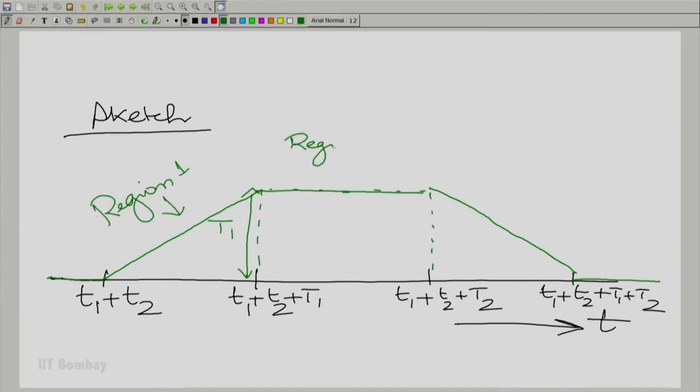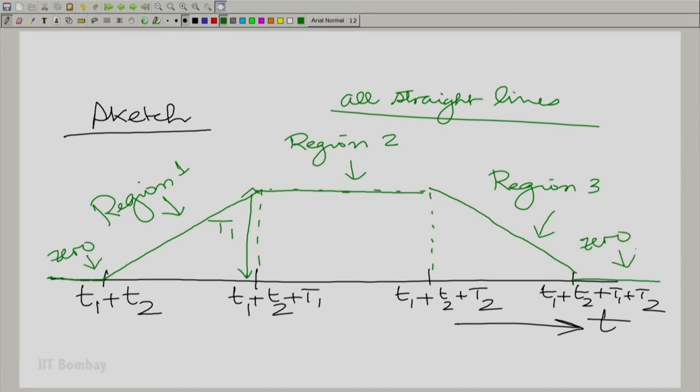Region 1, region 2, region 3. All straight lines, zero here and zero here. Now notice something interesting.